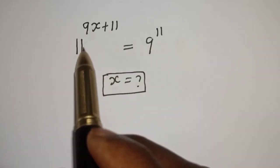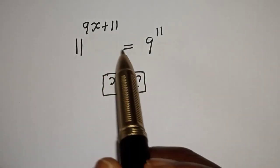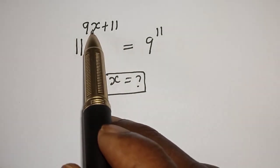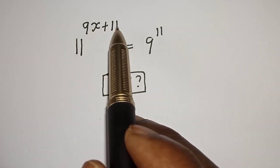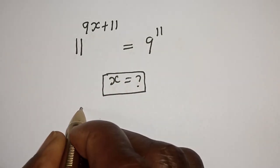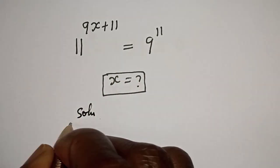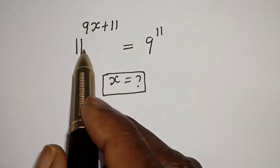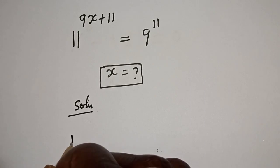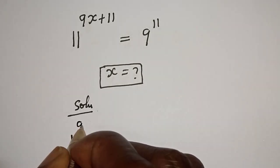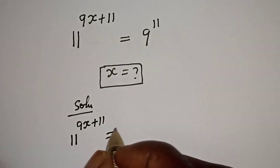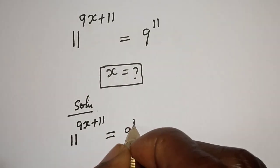Hello, welcome to Math Focus. How to find the value of S from this beautiful exponential function: 11 raised to the power of 9 raised to the power of s plus 11, is equal to 9 raised to the power of 11. The given equation is 11 raised to power 9s plus 11 is equal to 9 raised to power 11.